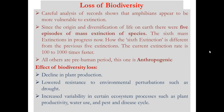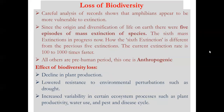The sixth mass extinction is currently in progress. It is different from the previous five because it is 100 to 1000 times faster. The previous five extinctions occurred in the pre-human period, before human evolution. The current sixth mass extinction is occurring in the human period, driven by human activities, and is therefore called anthropogenic mass extinction.